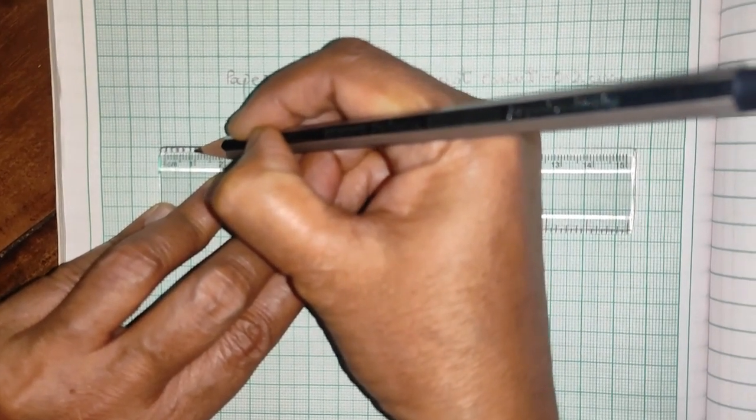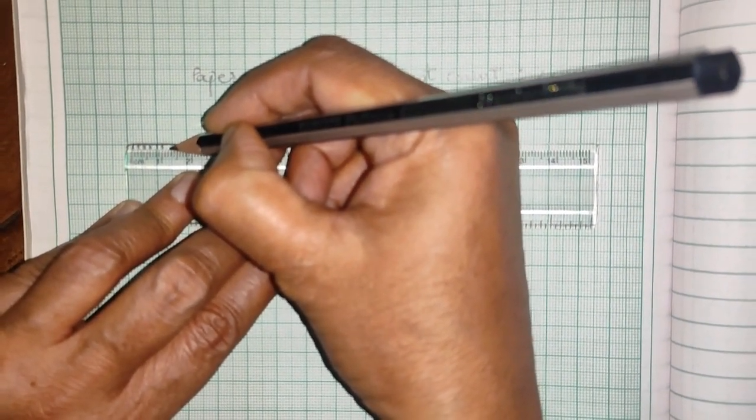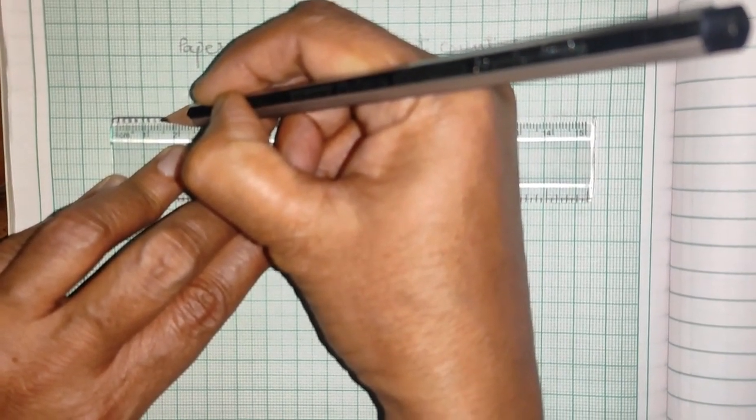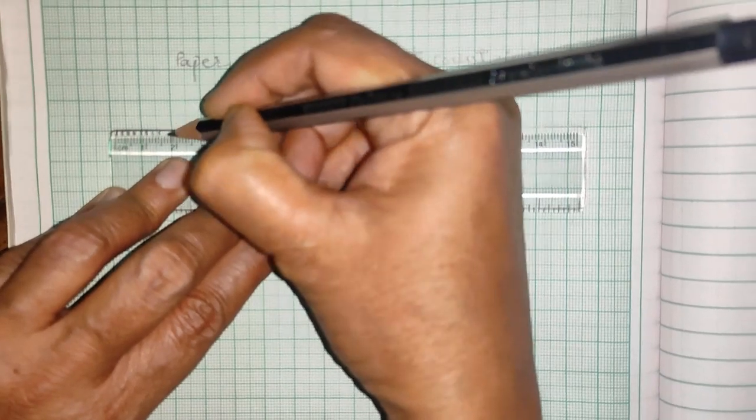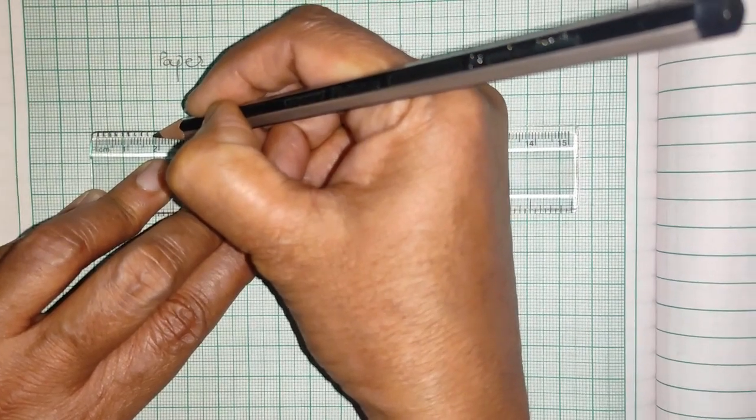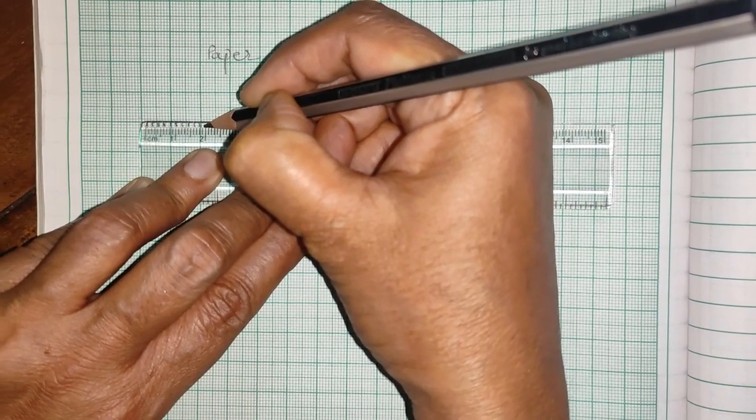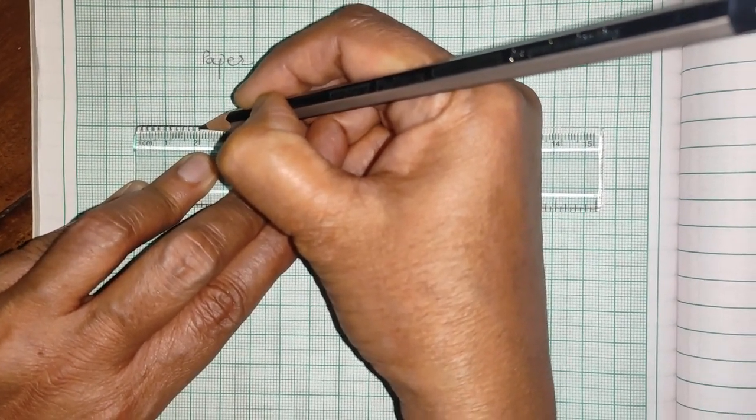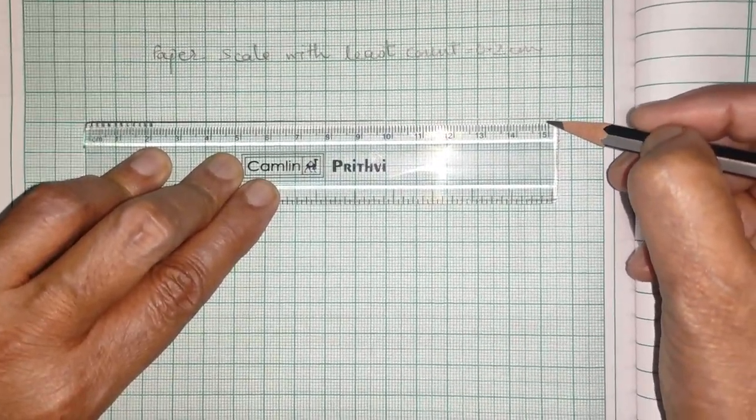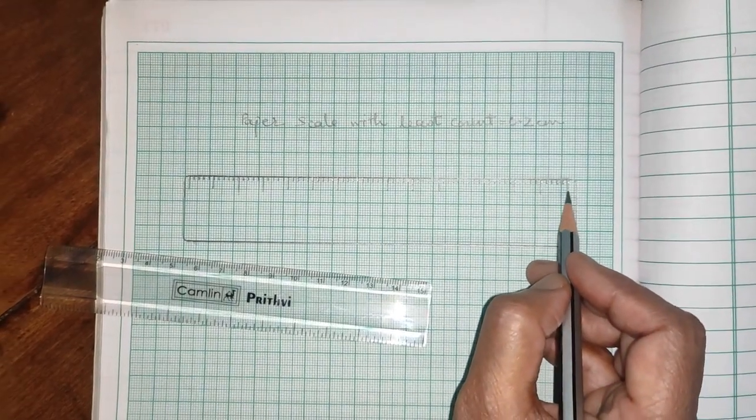Then, 1, 1 cm marking. Then, I need again 1.2, okay? Then I need 1.4, then I need 1.6, then I need 1.8, correct? So, then 2, 2 cm. Like this, I have to go on marking till 15 cm. So, I have marked here all up to 15, okay?